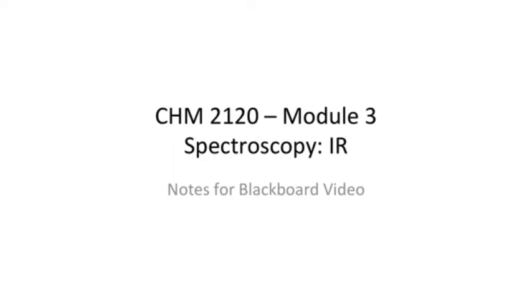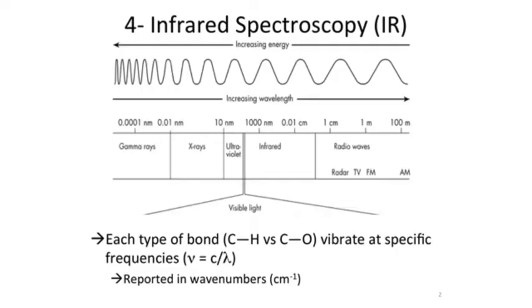Hi, and welcome to the video on infrared spectroscopy, or IR. The key idea with infrared is that each type of bond, for example CH versus CO, vibrates at a specific frequency in the infrared region of the electromagnetic spectrum. That frequency is reported in wave numbers.